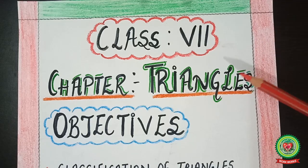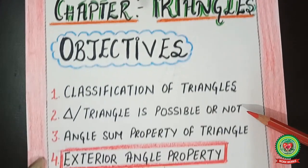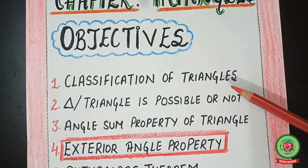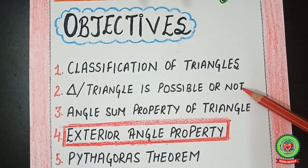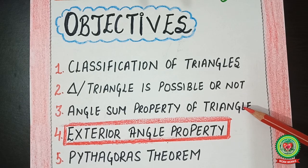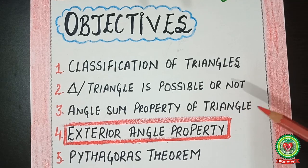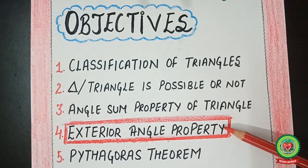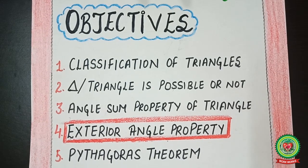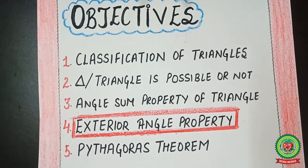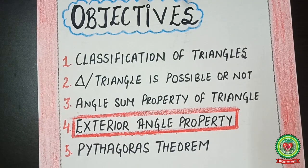Dear students, in this chapter on triangles, we have already learned about classification of triangles, whether a triangle is possible or not, and the angle sum property of triangle. Today our new topic is exterior angle property. We will learn about how to find the missing angles by applying this exterior angle property.